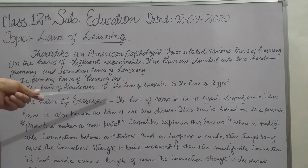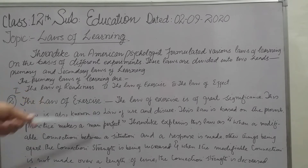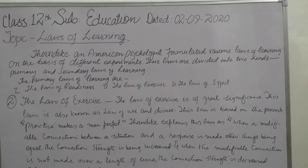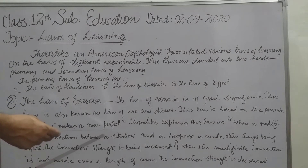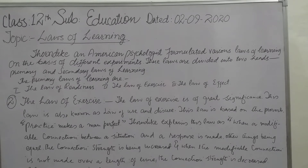Today we are going to discuss the law of exercise. The law of exercise is of great significance. This law is also known as the law of use and disuse. This law is based on the proverb 'practice makes a man perfect.' Thorndike explains this law as: when a modifiable connection between a situation and a response is made,